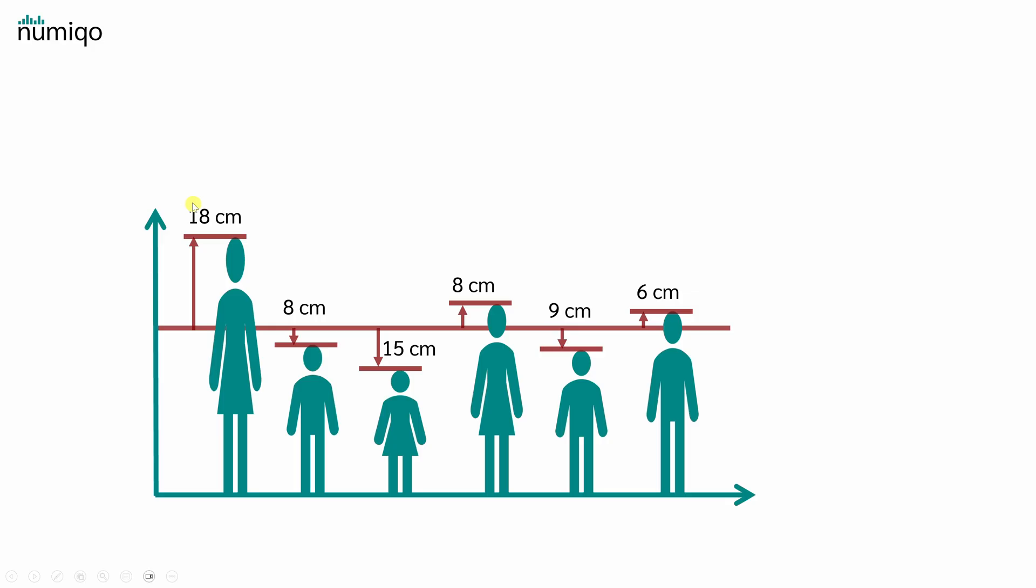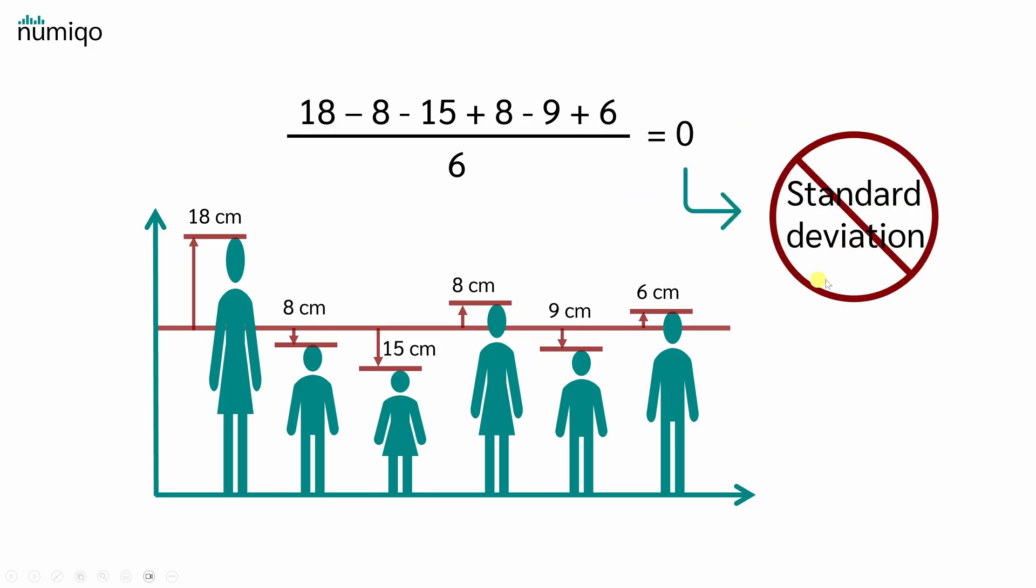Now let's calculate the arithmetic mean of the deviations from the mean. We calculate 18 minus 8, because we have a negative deviation, minus 15 plus 8 minus 9 plus 6. And now we divide all by the number of measurements, which is 6 in our example. And the result is, of course, 0, which is clearly not the standard deviation.